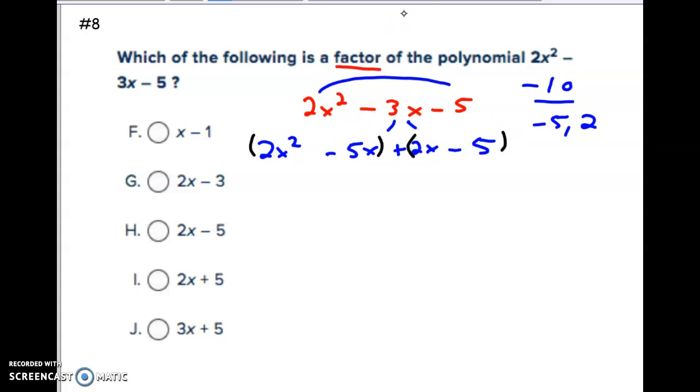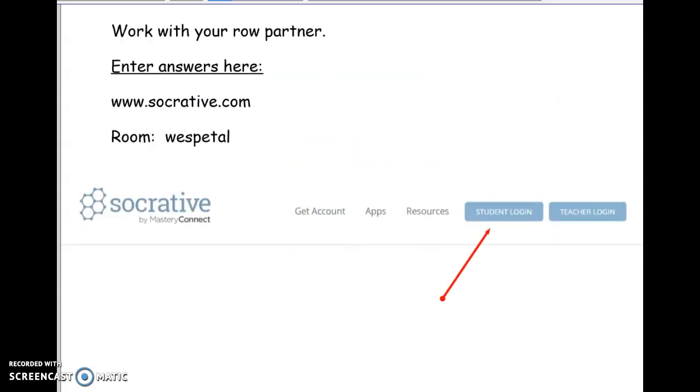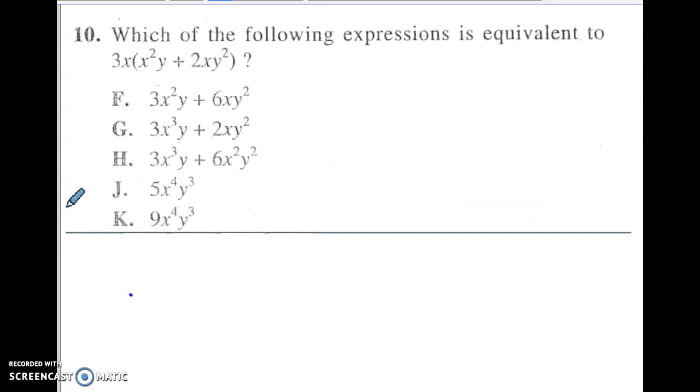All right, and now we just group. So this is called factor by grouping. So you group them together and pull out of the front a GCF. All right, which I think is just x. In the back, there's really no GCF here. So we do have to put a number in front. So I'm going to just put a 1. And then use that number in front there to make one of the factors. So whatever is in front, that's one factor, x plus 1. And then the back part, 2x minus 5. All right, so that would give us, it says following is a factor. So one of the factors looks like would be that guy.